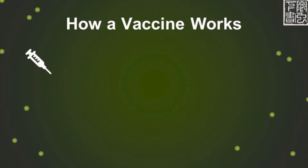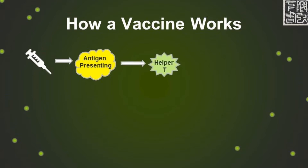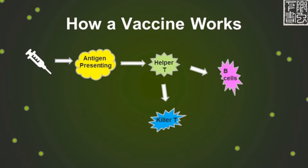A vaccine works by introducing viral particles or antigens to the antigen-presenting cells, and the antigen-presenting cells will present the antigen to the helper T cells. The helper T cells will then trigger B cells to produce antibodies against the antigen and activate killer T cells to kill the infected cells. In the future, the B cells and killer T cells will recognize and fight the same virus.